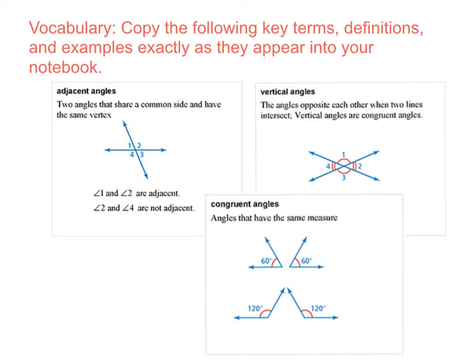Adjacent Angles are two angles that share a common side and have the same vertex. Vertical Angles are the angles opposite each other when two lines intersect. Vertical Angles are congruent angles. Congruent Angles are angles that have the same measure.